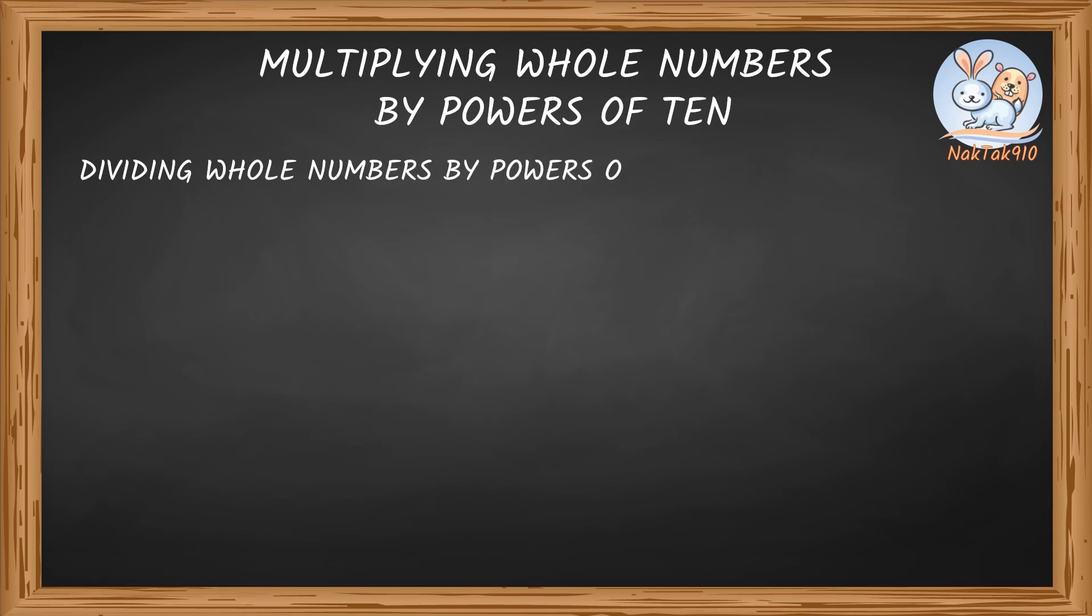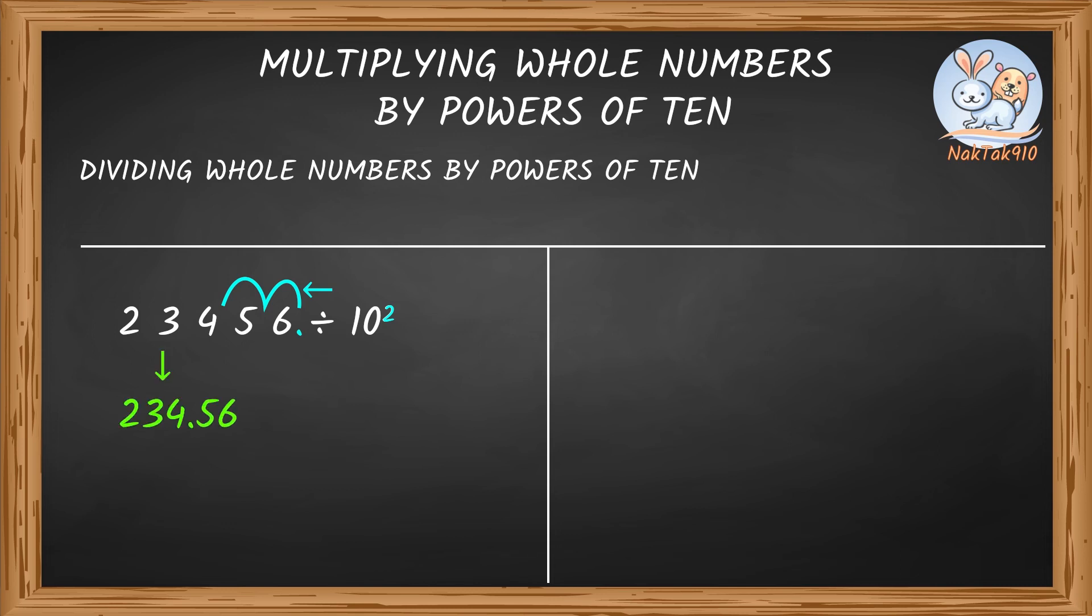Dividing Whole Numbers by Powers of Ten. When dividing a whole number by a power of ten, starting from the ones digit, moving the decimal point to the left as many times as power of ten. Here is an example. 23,456 divided by ten squared. In ten squared, the exponent here is two. Because the decimal is after six in 23,456, jump two times towards your left. So, 23,456 becomes 234.56.